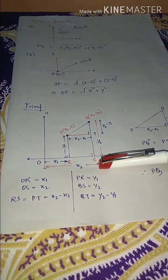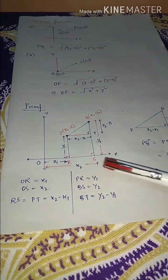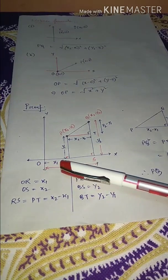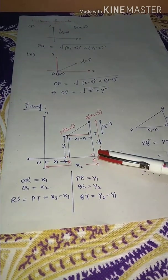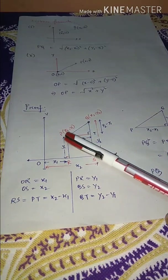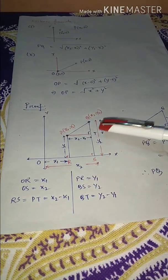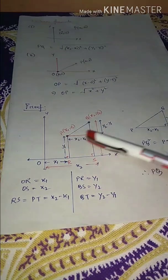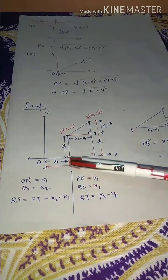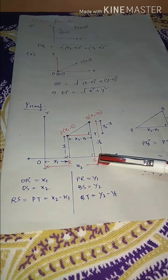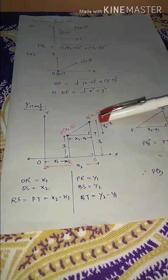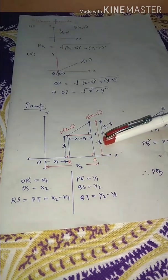To find the distance RS: the total length along the X-axis from O to S is X₂ and from O to R is X₁, so RS = X₂ − X₁. From P, we draw a perpendicular to QS and call the intersection point T. Since RS and PT are between parallel lines, PT = RS = X₂ − X₁.